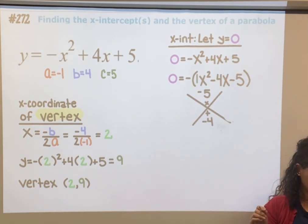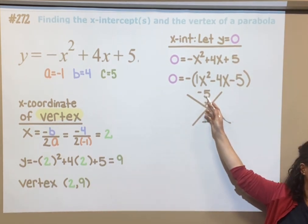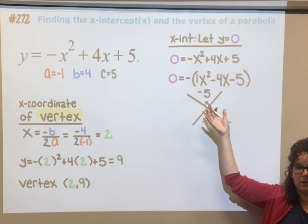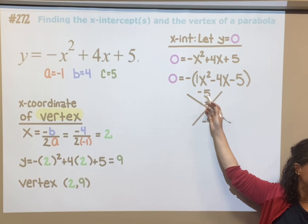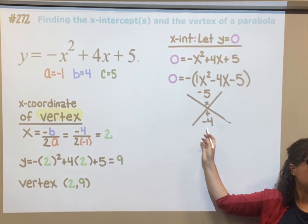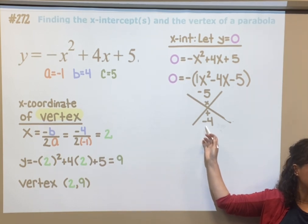We're trying to think of numbers that multiply together to get negative 5. And the only numbers that multiply to get 5 are 1 and 5. And if they multiply together to get a negative 5, one of those numbers needs to be negative and add up to negative 4.